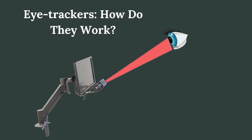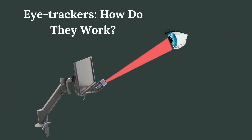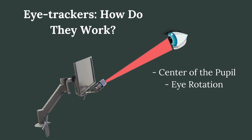This will generate a reflection on the cornea. The cornea is a transparent part of the eye that covers the front portion of the eye, including the pupil and the iris. The main function of the cornea is to bend light and it is responsible for the focusing of most of the light that enters the eye. The reflection of the infrared light by the cornea will be recorded by the eye tracker, and the eye tracker will use that to determine the center of the pupil, eye rotation, and gaze direction.